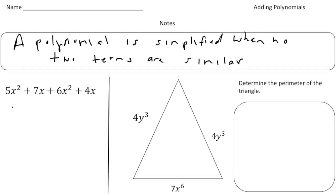Take a look at this first expression. We have 5x² + 7x + 6x² + 4x. So this polynomial has four terms, and notice we have a 5x² and then a 6x². Those are like terms because they both end in x². So 5x² and 6x² will give us 11x². But we also have a 7x and a 4x. So 7x + 4x will give us 11x.